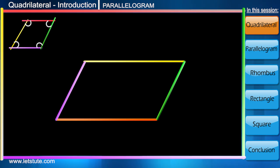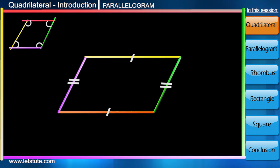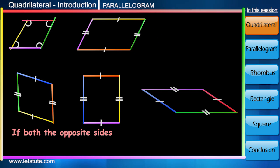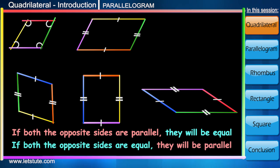If we notice, this quadrilateral will always have two pairs of equal sides. Friends, if opposite sides of a quadrilateral are parallel, then they will be equal, and vice versa—if they are equal, they will be parallel.